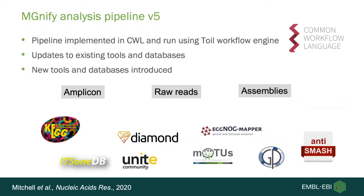So to recap: we've QC'd the reads, extracted the large and small subunit ribosomal RNA, predicted proteins, run them through InterPro, and looked at Gene Ontology terms. MGnify analysis version 5 builds on this — it introduces more tools and databases to aid with analysis at different stages. We have three standardized pipelines for three data types: amplicon datasets, raw shotgun data, and assemblies. The pipelines are described in Common Workflow Language and run using the Toil workflow engine.